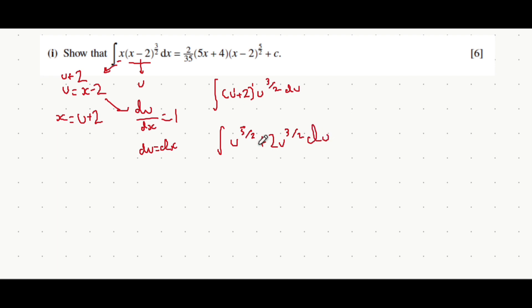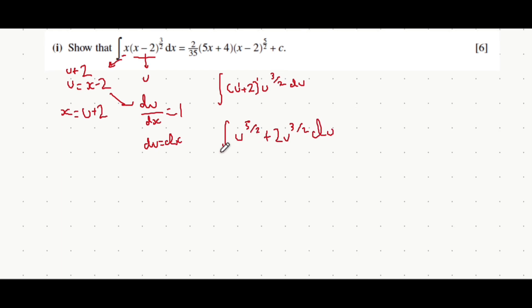To integrate all of this, you integrate each of the terms individually. So when you're integrating, you're adding 1 to the power, so it becomes u to the 7 over 2, and you're dividing by that new power. Dividing by the fraction is the same as multiplying by the reciprocal of that fraction, so it's the same as multiplying by 2 over 7. So I'm just going to write this out as 2 over 7, or 2u to the 7 over 2, all over 7.